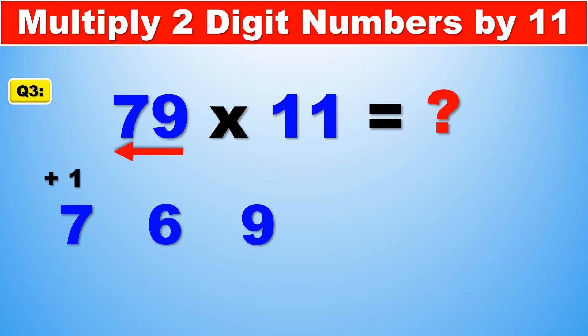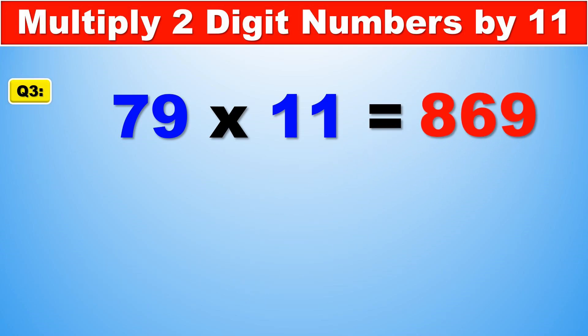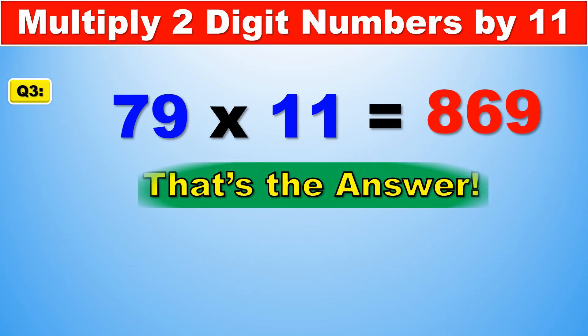So we're going to keep the 6 in 16, and we're carrying over the 1 to the next digit. So just add 1 to 7 in order to get 8. And so 8 being the first digit, now 6 is the middle, 9 is the last digit, meaning that 79 times 11 is 869.